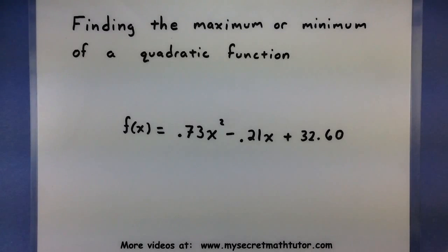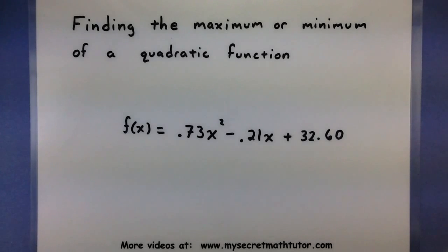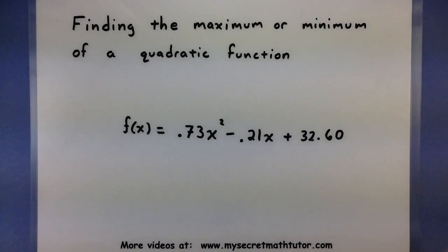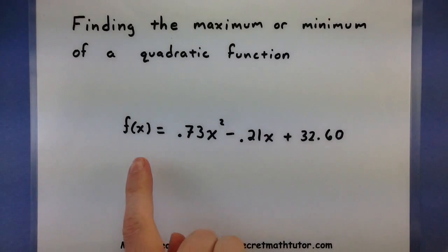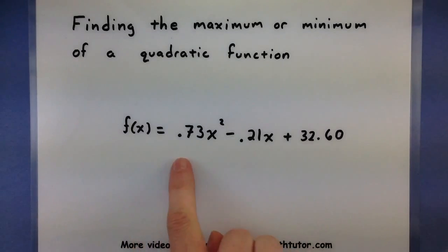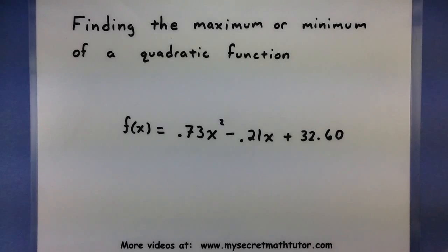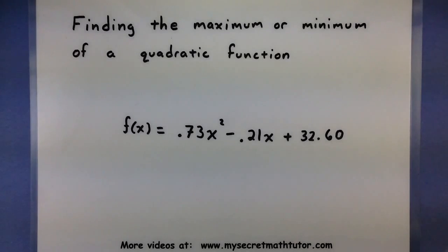Today we're going to work on finding the maximum or minimum value of a quadratic function. We're looking to figure out where the function takes on its greatest value and where it takes on its absolute smallest value. These quadratic functions can get quite complicated — they might have decimals, fractions, or a few other things. But finding the min or max is actually a straightforward, simple process if you know what to look for. Let's look at the process and see how this is done.